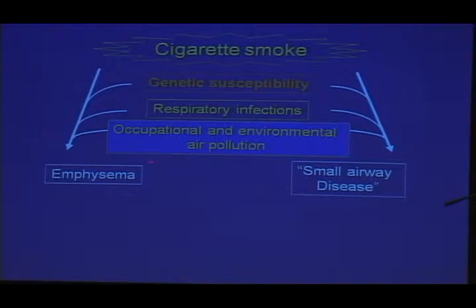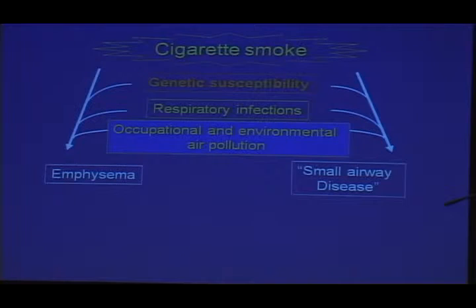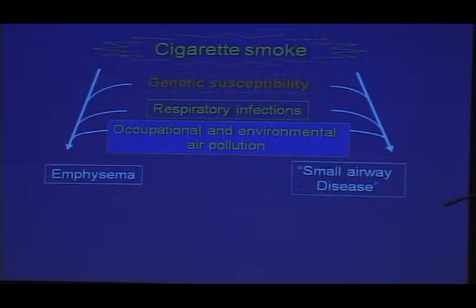Both of these can occur with cigarette smoking. In some individuals, emphysema is the predominant phenotype; in some, small airway disease is the predominant phenotype; and in some, both contribute. The fact that some individuals have predominantly one or the other phenotype suggests there are different mechanisms and perhaps different genetic susceptibilities.